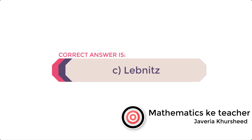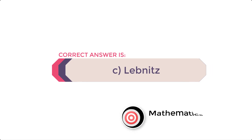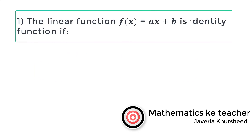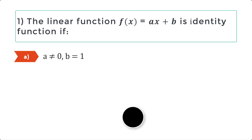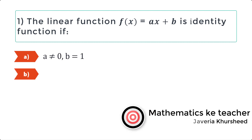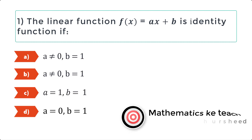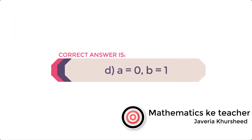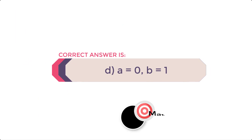Question 1. The linear function f(x) = ax + b is an identity function if: a) a does not equal 0, b equals 1, b) a does not equal 0, b equals 1, c) a equals 1, b equals 1, d) a equals 0, b equals 1. Correct option is d) a equals 0, b equals 1.